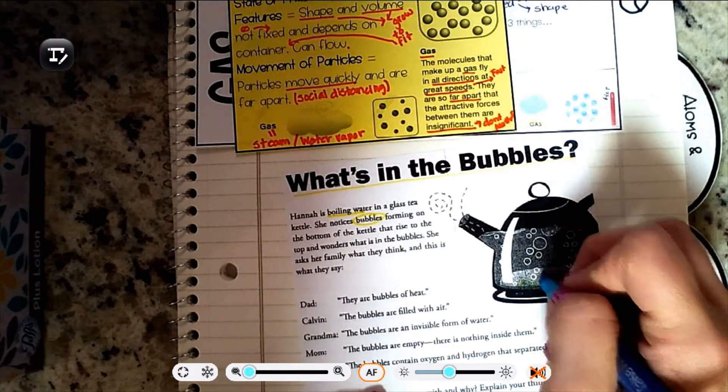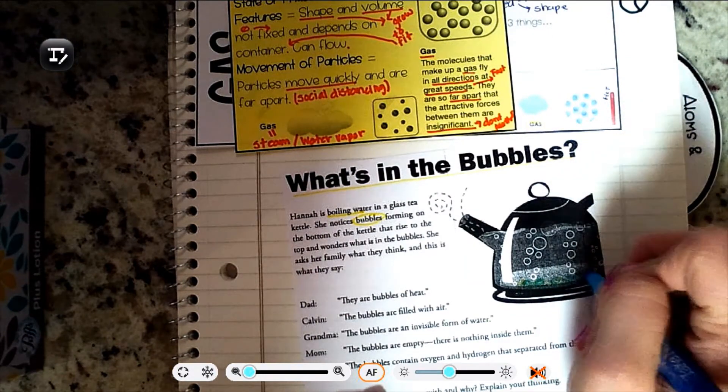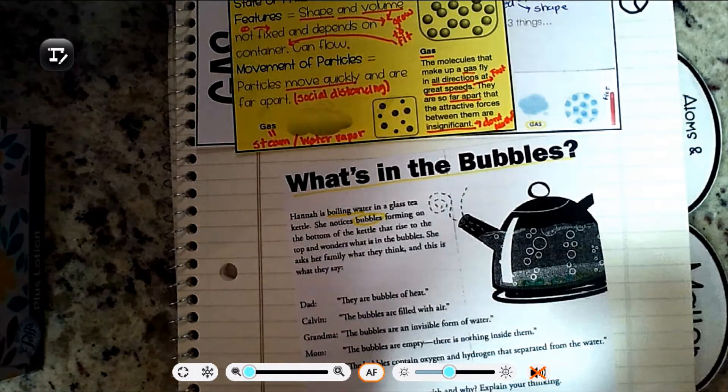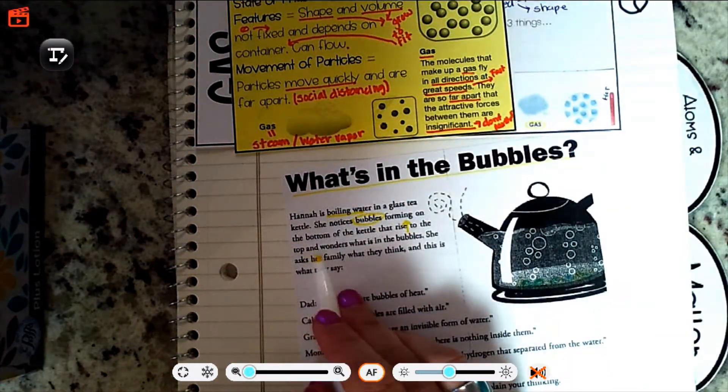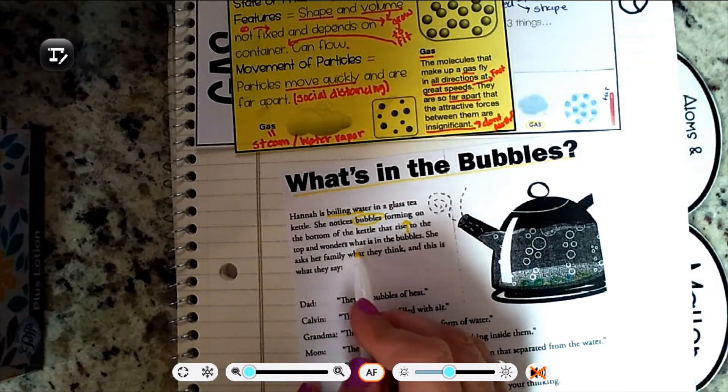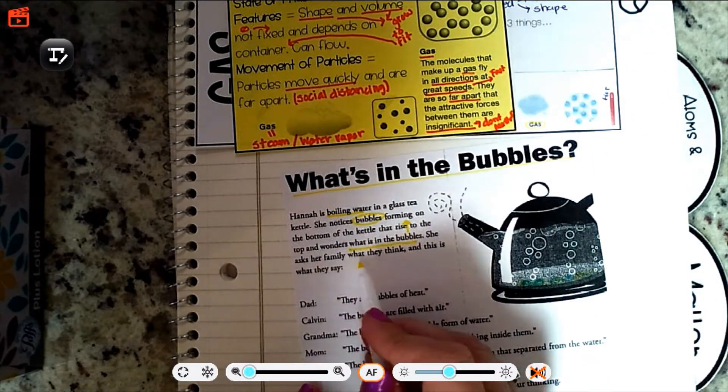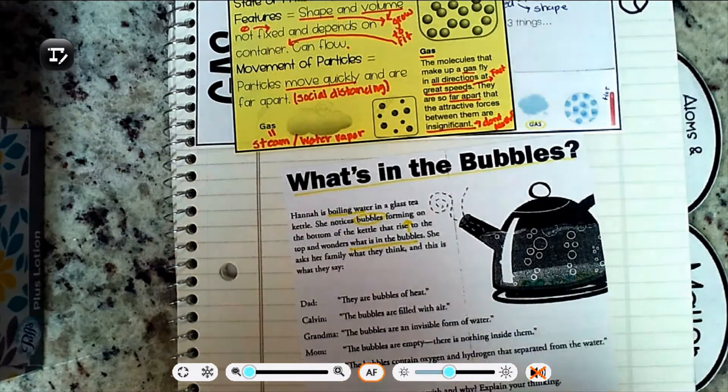There's bubbles forming down on the bottom of the kettle and they rise. Rise means that they float to the top and wonders what is in the bubbles. She asks her family what they think, and this is what they say.